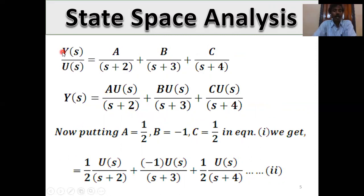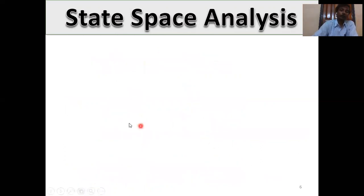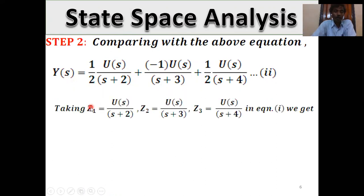Substituting A, B, and C values, we get Y(s)/U(s) = A/(s+2) + B/(s+3) + C/(s+4). Multiplying both sides by U(s): Y(s) = A·U(s)/(s+2) + B·U(s)/(s+3) + C·U(s)/(s+4). Putting A = 1/2, B = −1, C = 1/2, we get Y(s) = (1/2)·U(s)/(s+2) − U(s)/(s+3) + (1/2)·U(s)/(s+4). Now define Z₁(s) = U(s)/(s+2), Z₂(s) = U(s)/(s+3), and Z₃(s) = U(s)/(s+4).